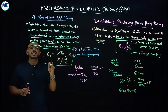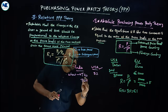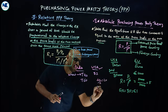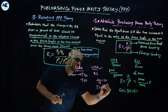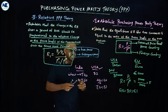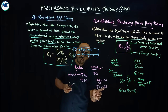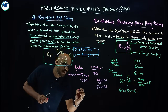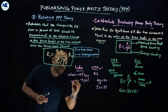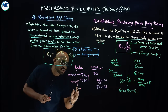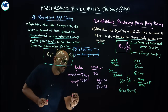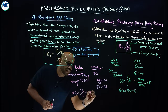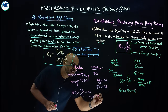Using absolute purchasing power parity theory: R = 40 / 2 = 20, so rupees 20 is equal to dollar 1. Now considering relative purchasing power parity, which accounts for changes in price level: the new exchange rate = 60 / 2 = 30. That is, the exchange rate becomes rupees 30 equal to dollar 1. This shows that the value of the rupee is declining in terms of the dollar.